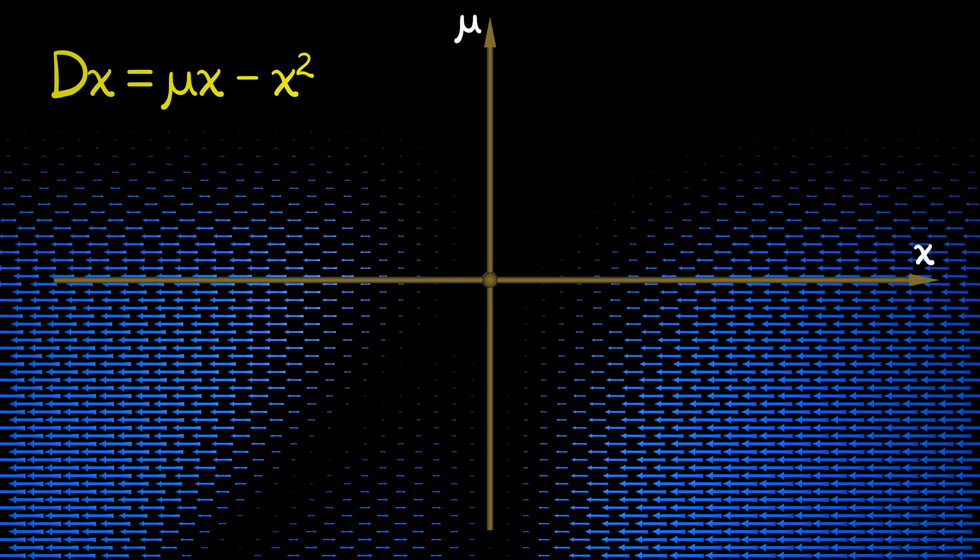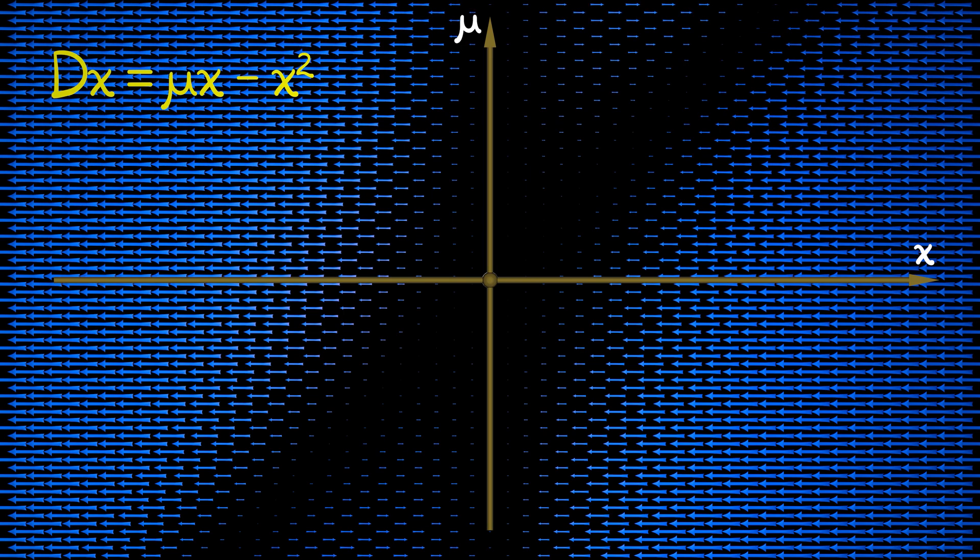Now, we have two lines of equilibria, one line, a vertical line, at x equals zero. And when mu is negative, this is stable. When mu is positive, this is unstable. But we also have a line of equilibria at x equals mu.